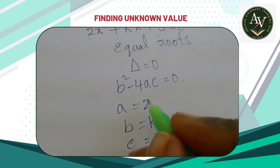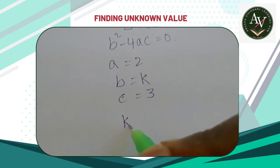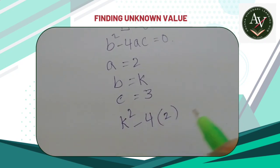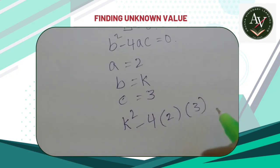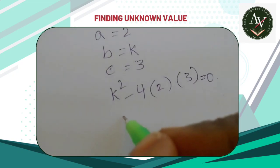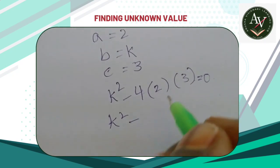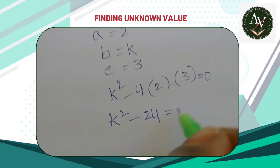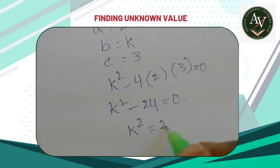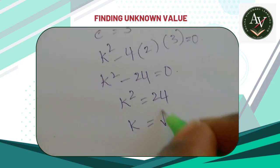Now substitute all these values in the given formula. So that b² means k² minus 4ac, a means 2, c means 3, is equal to zero. Then it will be k² minus 24 is equal to zero. k² is equal to 24 and k is equal to root 24.